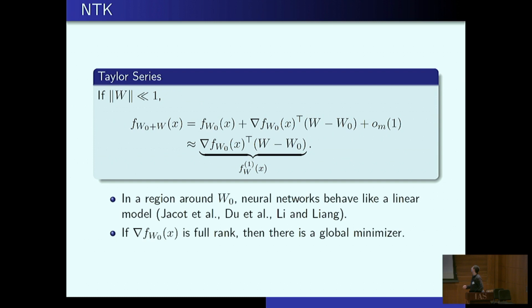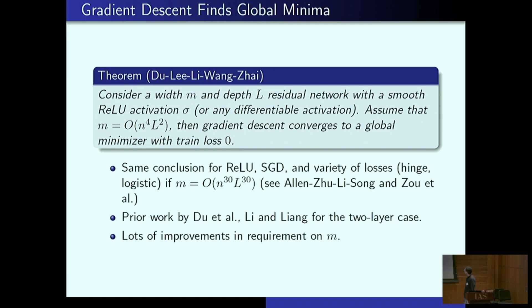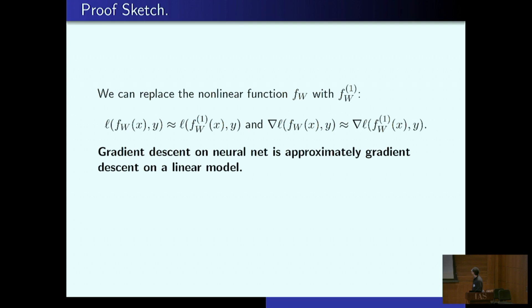Essentially using this observation, there were several papers simultaneously that showed a theorem sort of like this. They basically said that nearby random initialization you can find the global minimizer and gradient descent in fact does go to global minimizer near the random initialization. The proof is nothing but the linearization that we wrote earlier. You simply have your loss, it's very close to loss of the linear model, the gradient is very close to that of the linear model. So the gradient descent on the neural net is approximately gradient descent on a linear model.